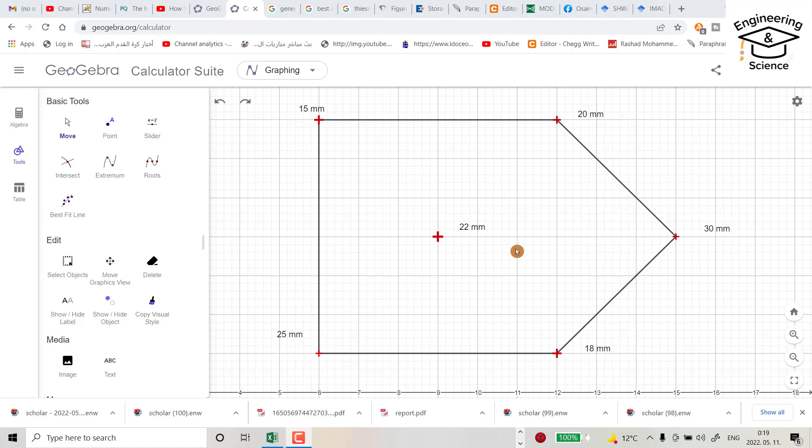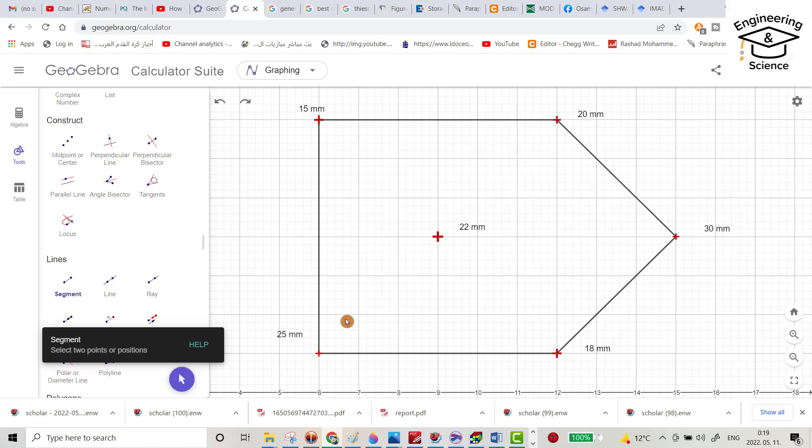How we can create Thiessen polygons? In the first step, we make lines connecting the stations. First, connect this station with this one, also this one with this one, and this one is already connected. Then connect this one with this one, and you can connect this one in this way or in this way, it doesn't matter.